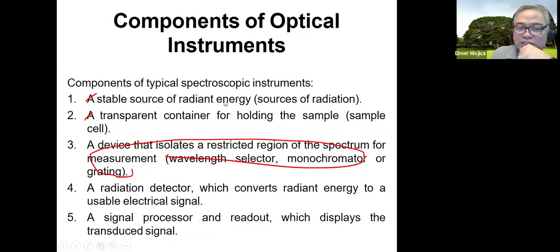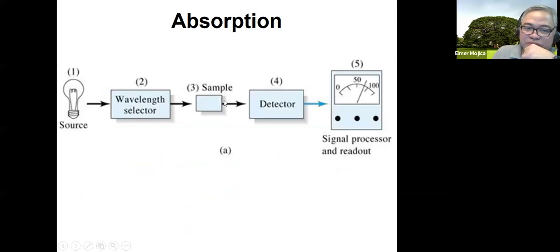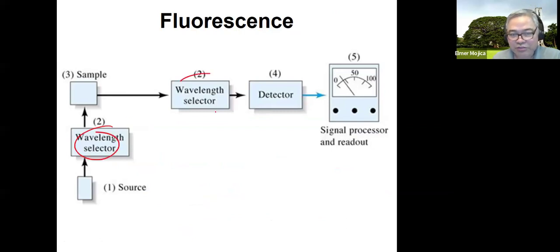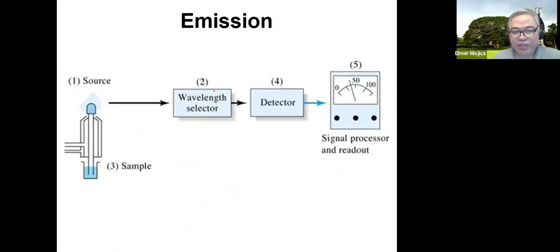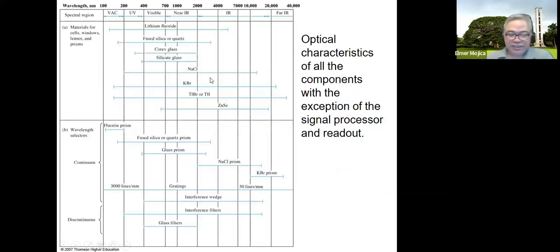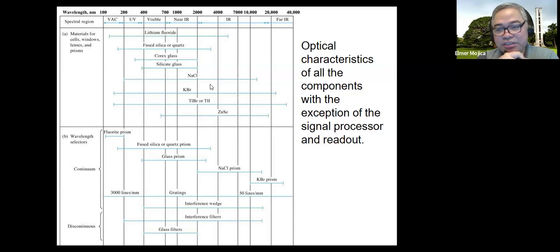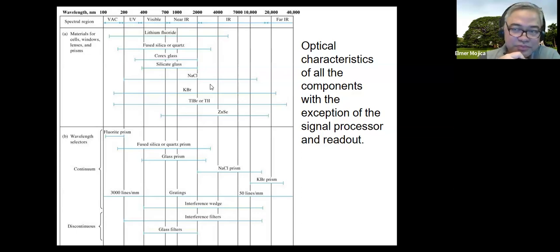Tonight, we're going to look at the different components of the optical instrument. Everything we've discussed so far is just the wavelength selector. We didn't discuss the other components yet. What we're trying to do is at least discuss these other components. If you look at the different types of instruments, they are always the same in terms of their parts.